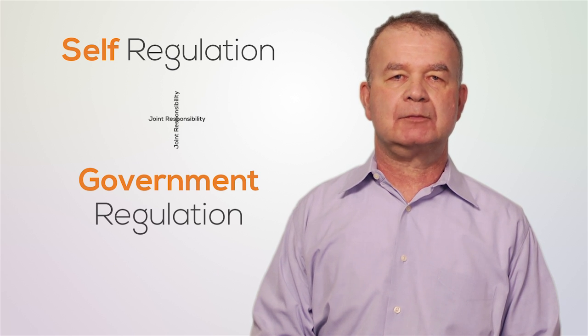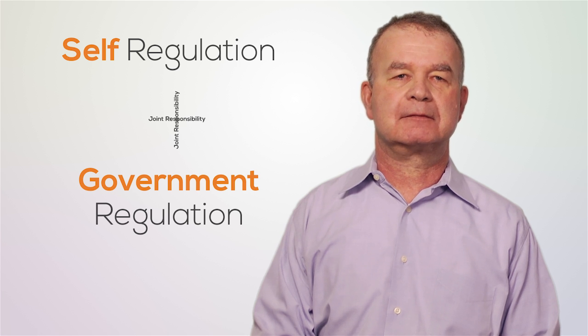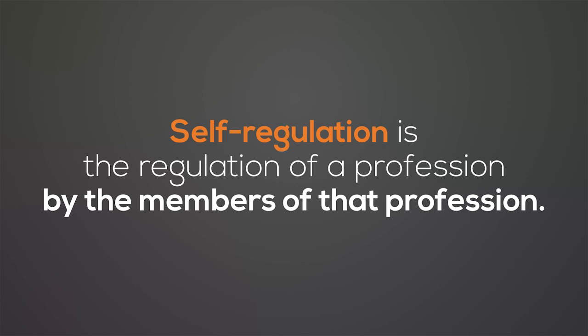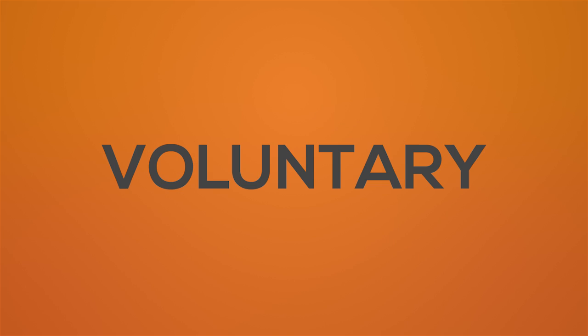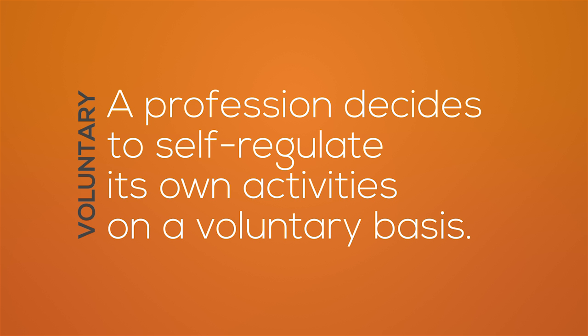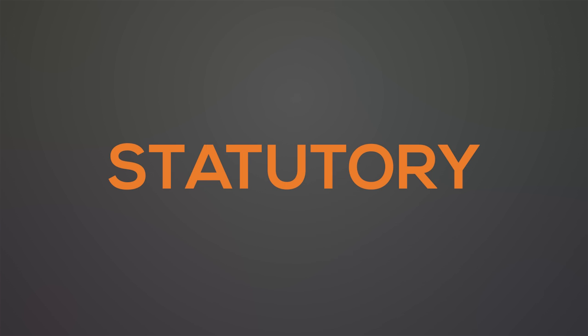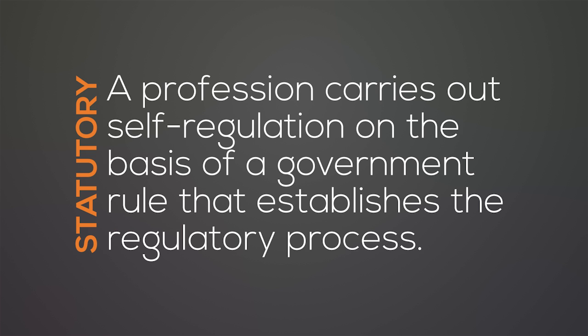Now we'll look at some common professional regulation models. These include self-regulation, government regulation, and joint responsibility, which combines both self and government regulation in different ways. Self-regulation is the regulation of a profession by the members of that profession, often with limited decision-making input or participation from the government or the public. Government regulation is the regulation of a profession by government, often with limited decision-making input or participation from the profession or the public.